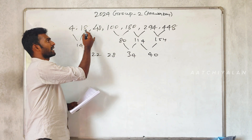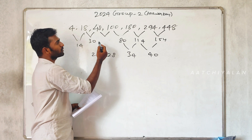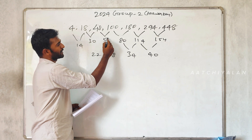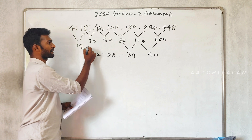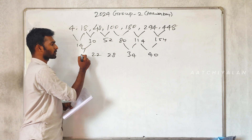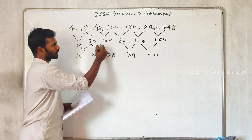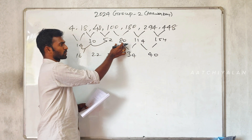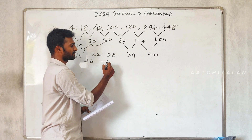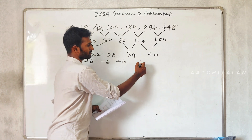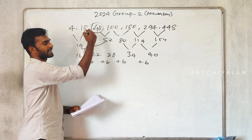48 is confirmed. Next: 30, 52. What's the difference? First: 14, 30 — gap 16. Then 30, 52 — gap 22. Then 52, 80 — gap 28. That is plus 6 added each time. So the reverse is 48.